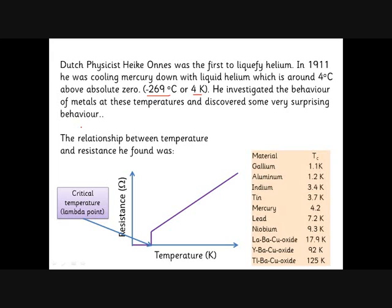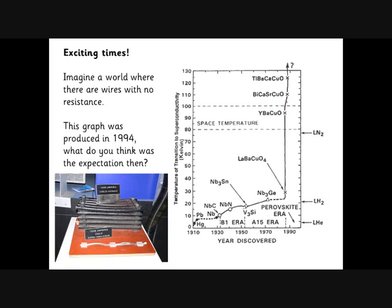A lot of research followed, and people found many other metals that become superconducting at low enough temperatures. Over time, higher and higher critical temperatures were discovered, getting up to around minus 100 degrees Celsius, though very practical applications exist at much lower temperatures.